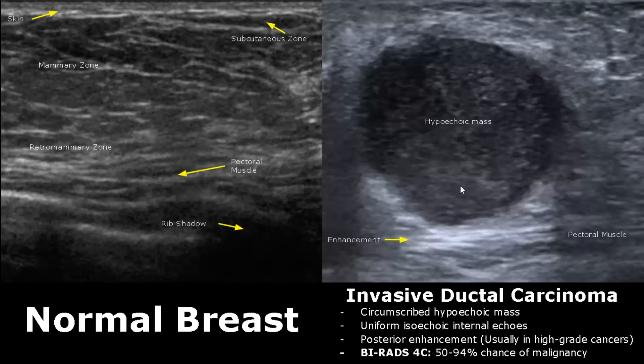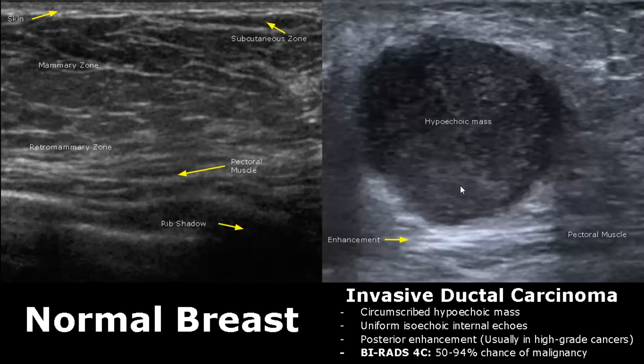Here we have another image of invasive ductal carcinoma showing a circumscribed hypoechoic mass with uniform internal echoes. It also has posterior enhancement suggesting a high-grade cancer. This illustrates that invasive ductal carcinoma has many appearances, and ultimately it is confirmed with biopsy.